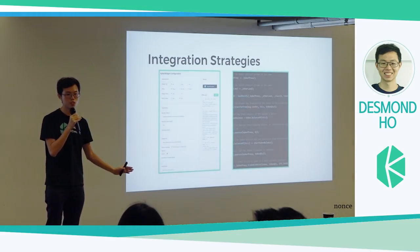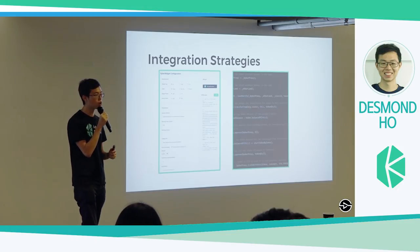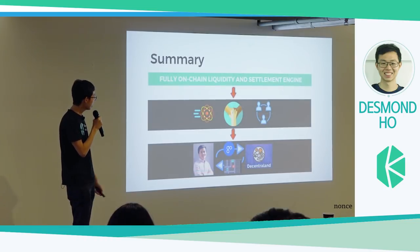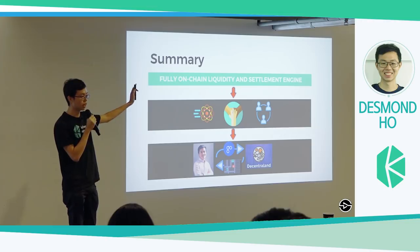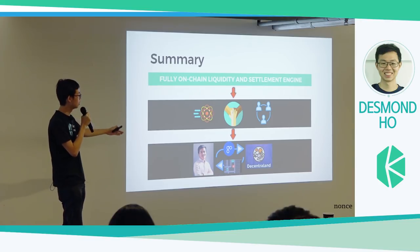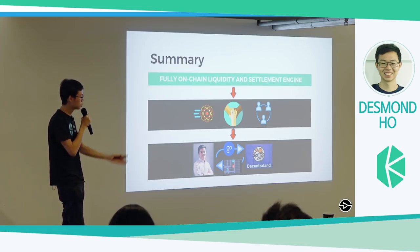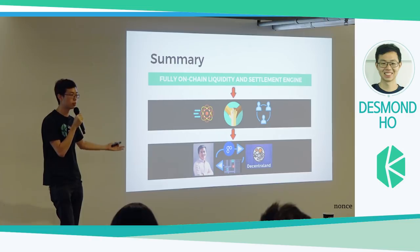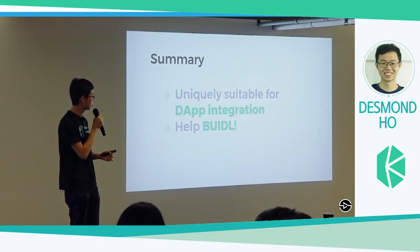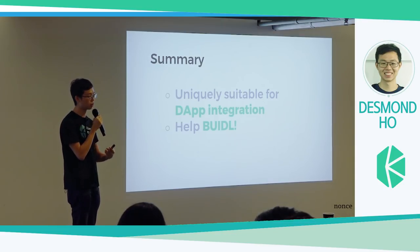For integration strategies, it's as simple as incorporating a widget, but for the use cases I talked about you'll want smart contract integration. To summarize: we have a fully on-chain liquidity and settlement engine enabling atomic and immediate settlement, the ability to interact with other parties, and the ability to wrap multiple value exchanges in a single transaction — allowing payment and financial flows that were otherwise impossible. We are uniquely suitable for this integration and it is our commitment to help build and grow this ecosystem.